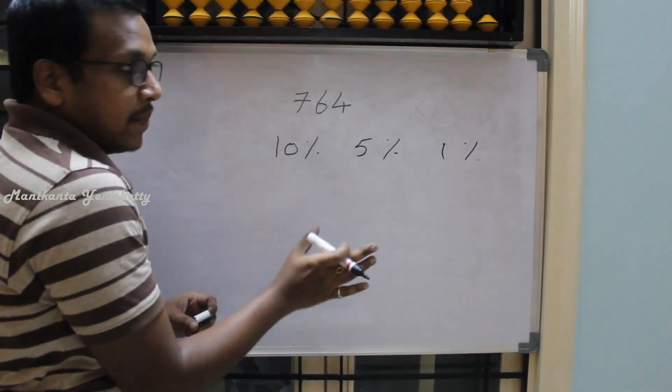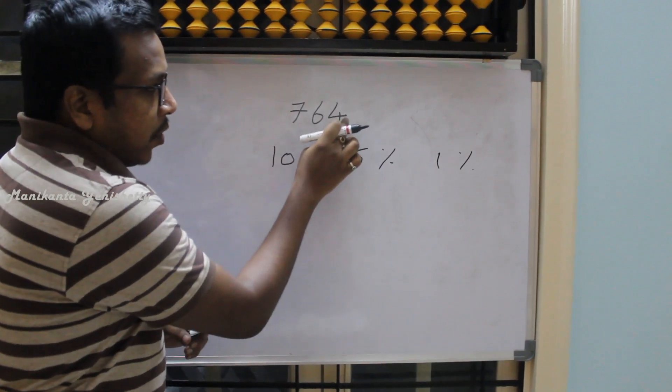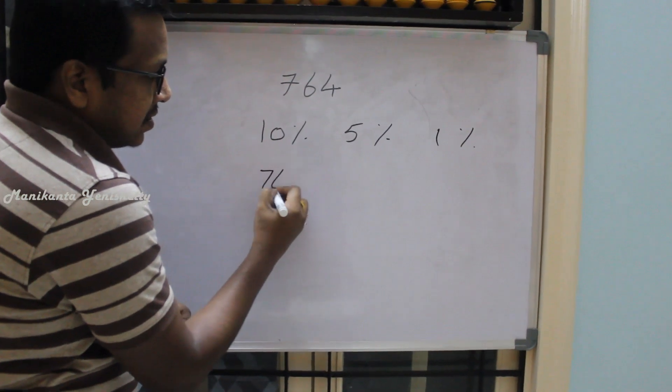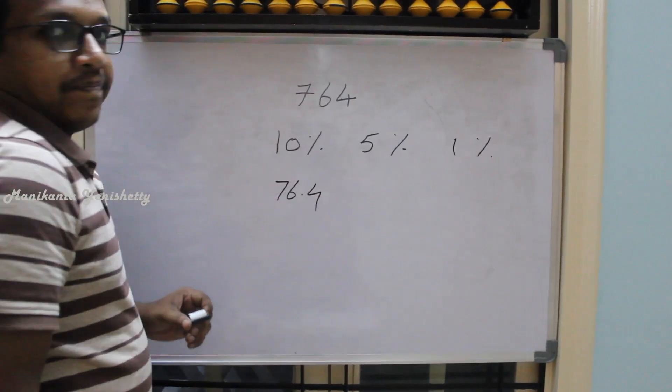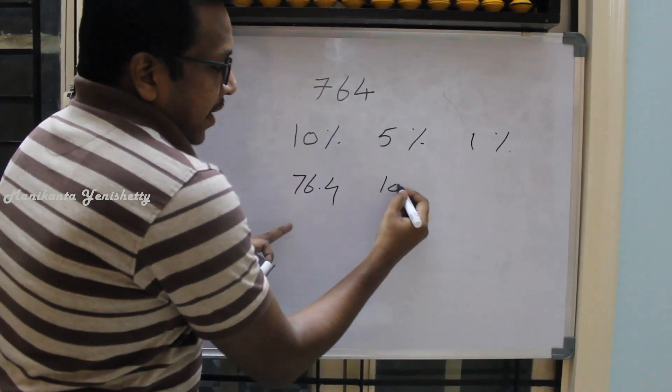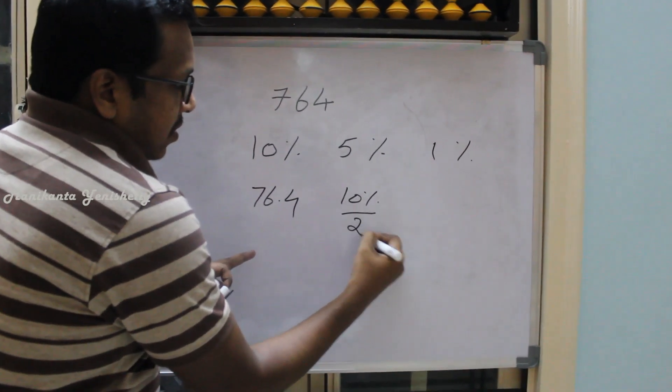10% of any number is nothing but keeping the decimal point after one digit from the right hand side. So it is nothing but 76.4, and 5% means 10% by 2.